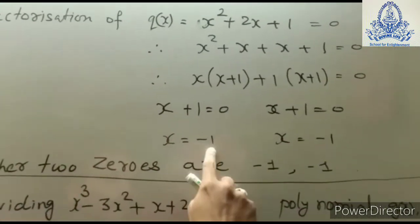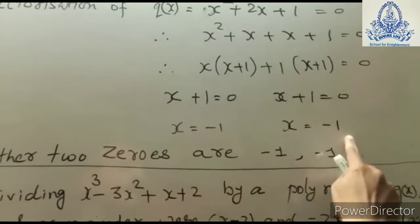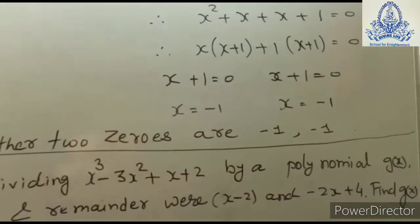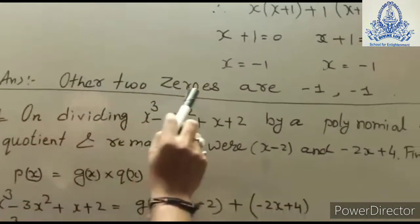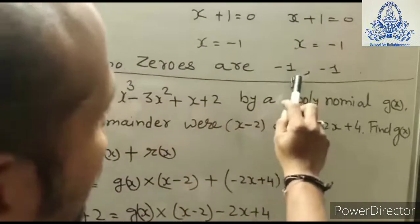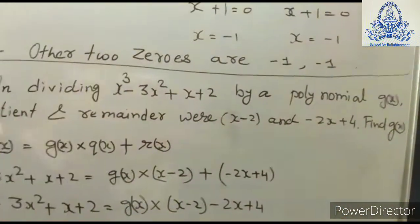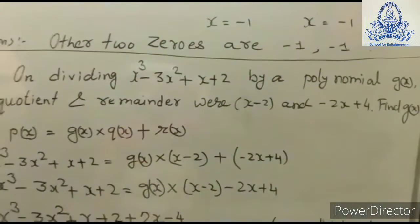So the other two zeros of the polynomial are −1 and −1.